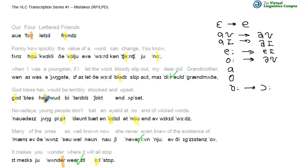By the way, I forgot to mention that the short A in 'value' should of course be the ash here. And in 'bloody' we need the wedge instead of these strange symbols, which are not part of the system.